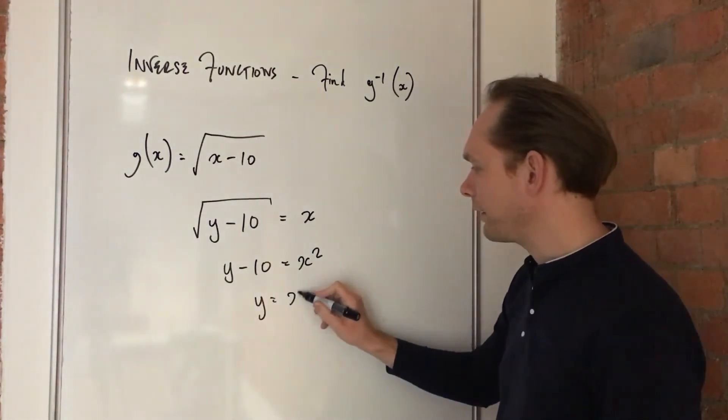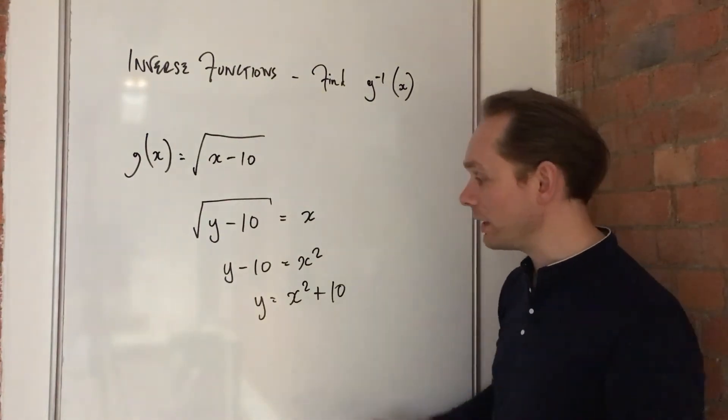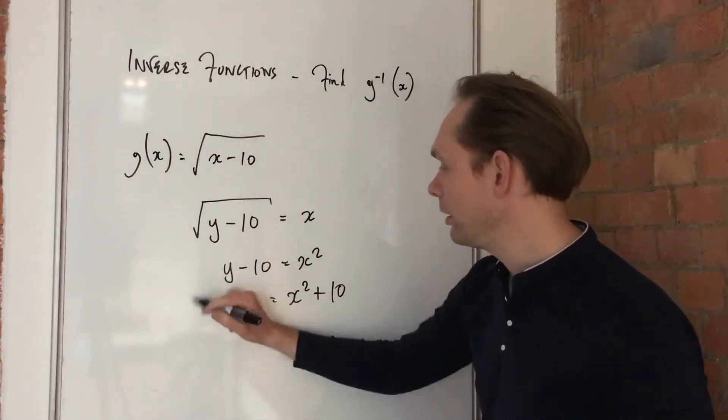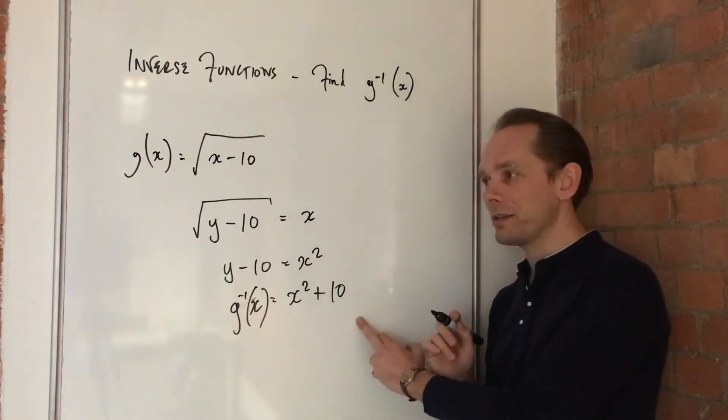y equals x squared plus 10. And that is the inverse function. We've done it. You can knock that out and say g to the minus 1 of x is x squared plus 10.